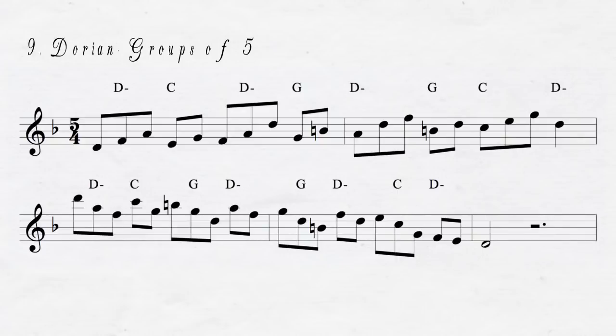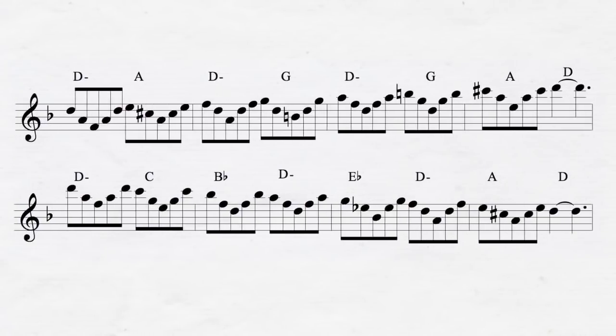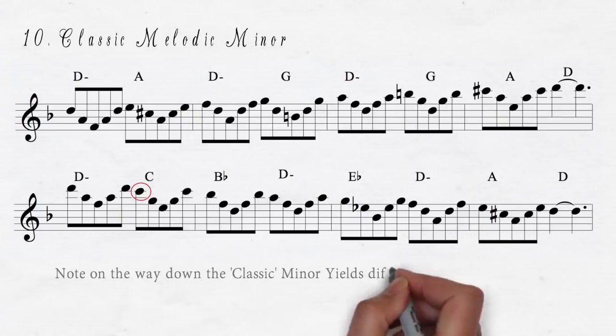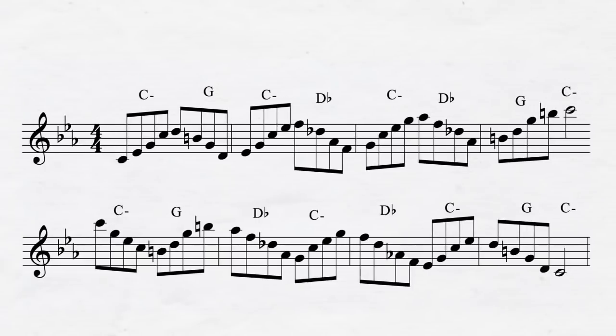Most of the exercises, in fact all of them I think, have been going up. This exercise starts going down. The next example uses the Neapolitan flat two chord to replace the four minor.